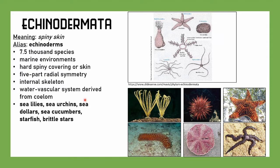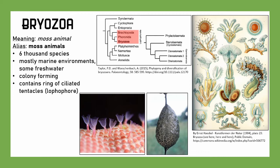Branching out, there are more interesting forms. We have Bryozoa, which means 'moss animal' — they're known as moss animals. There are 6,000 species, mostly marine with some freshwater. They are often colony-forming. A big feature is they contain a ring of ciliated tentacles, also known as lophophores. Bryozoa are closely related to Brachiopoda and Phoronida — they're all in a larger grouping called lophophorates because they have those ciliated tentacles. There are both marine and freshwater examples in a myriad of forms.